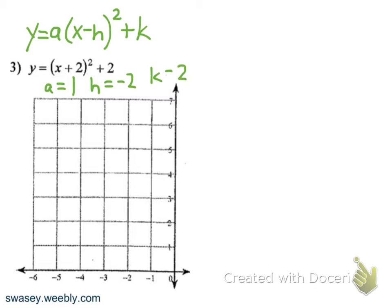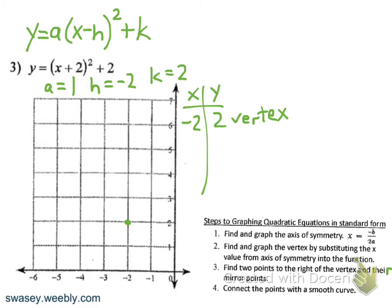So what this tells us is that we have a vertex at negative 2, 2. Now if you've been tracking from where we were graphing in standard form, we've already got step 2 done. We found the vertex and we graphed it.